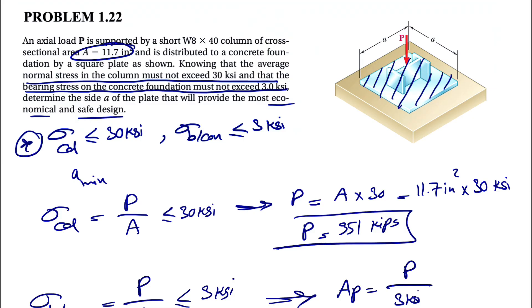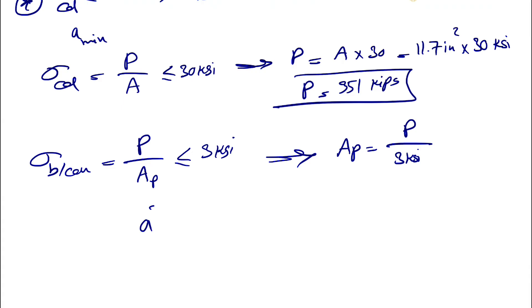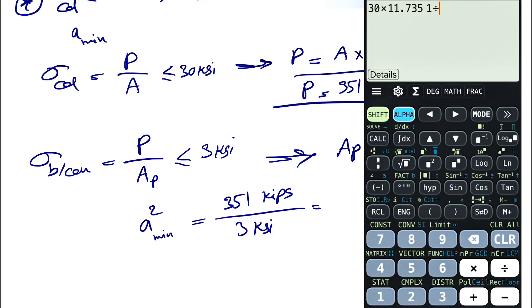The plate is square, so A squared is our area of interest. Since we're going with the maximum force for the maximum stress in this system, we'll get the minimum area for an economical design. The force P is 351 kips divided by 3 KSI, which gives us the area in inches squared. 351 divided by 3.